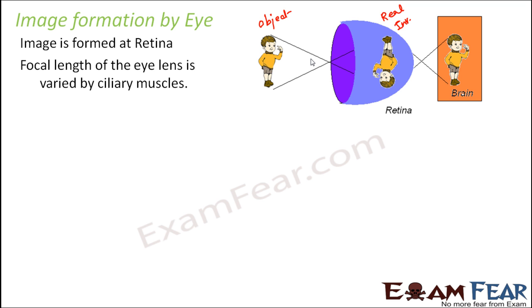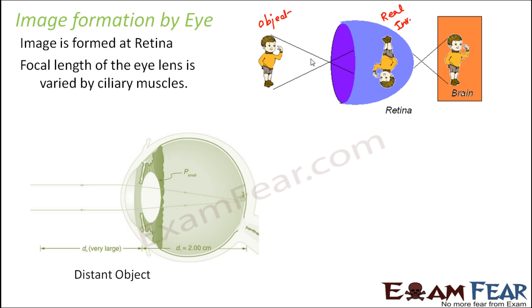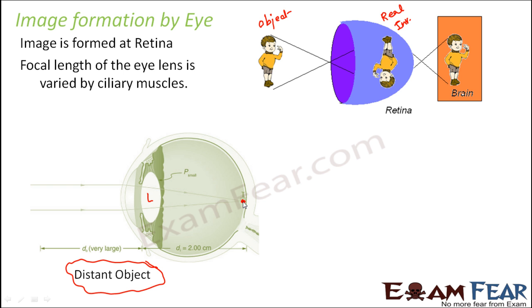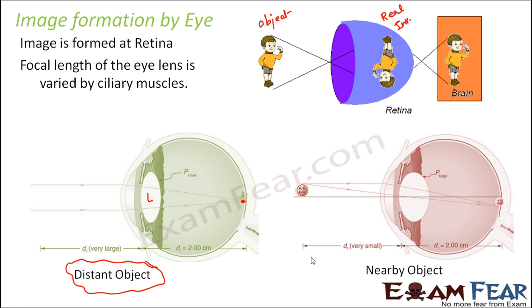The focal length of the eye lens is varied by the ciliary muscles so that the image is always formed on the retina. For a distant object, parallel rays of light reach the lens. Since the eye lens is a convex lens, the rays converge and finally meet at a point on the retina, where a real and inverted image is formed.